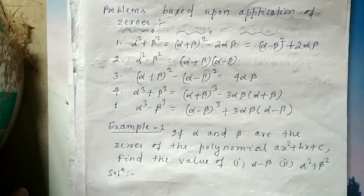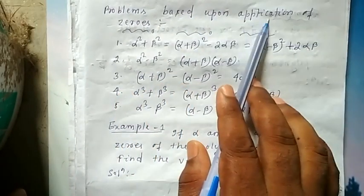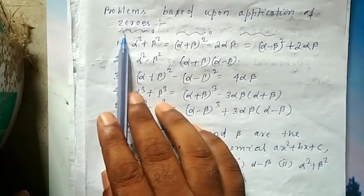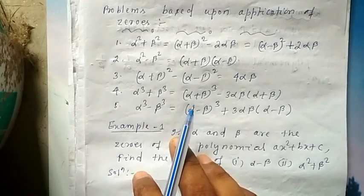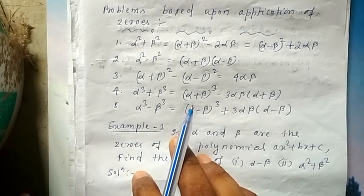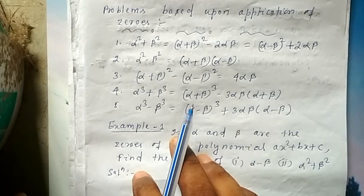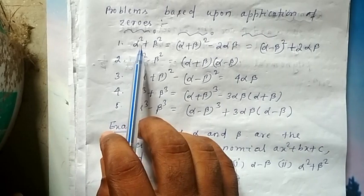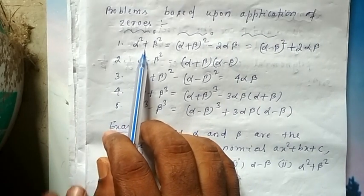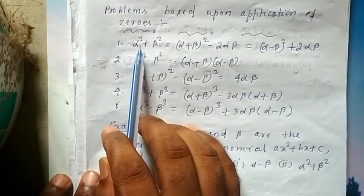Today I am going to discuss some problems based upon application of zeros — some important results based upon zeros of a quadratic polynomial. In your earlier classes you have already studied algebraic identity formulas like (a+b)² = a²+b²+2ab, and a²+b² = (a+b)²-2ab, or (a-b)²+2ab. Some important results based upon the zeros of quadratic polynomials are as follows: α²+β²...